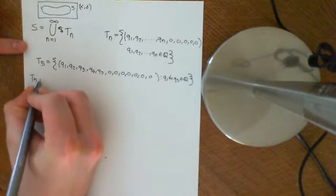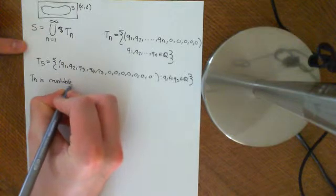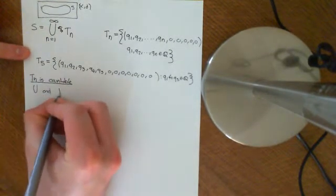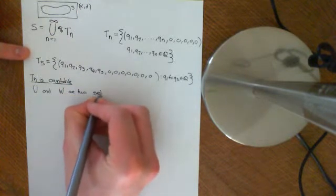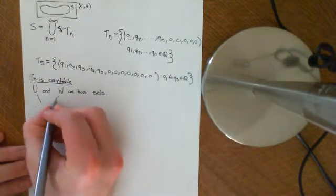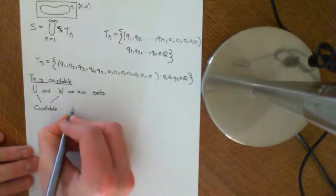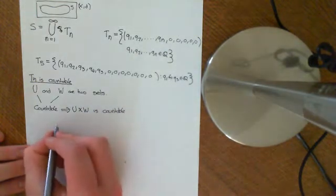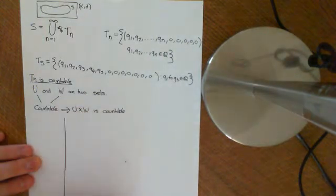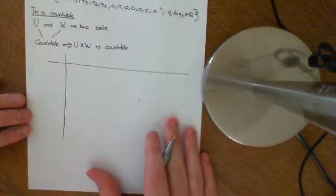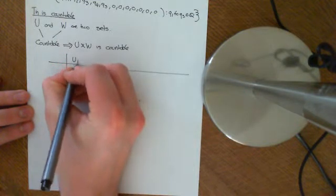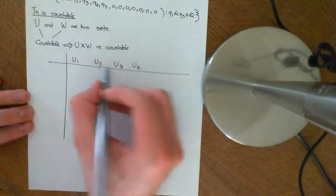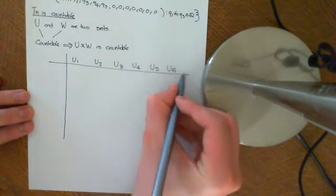So Tn is countable — that's the first thing we have to show. What I want to show is that if you have two sets U and W, and both U and W are countable, then U cross W is also countable. If U is countable, we can list out its elements: U1, U2, U3, U4 — we can subscript all elements of U with a natural number, the one it's bijected with. U5, U6, etc.